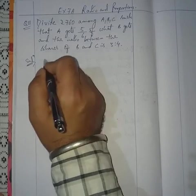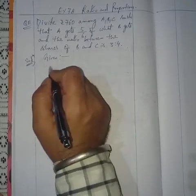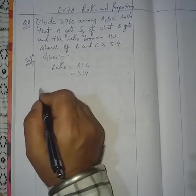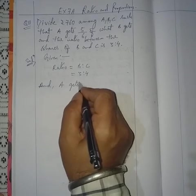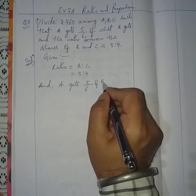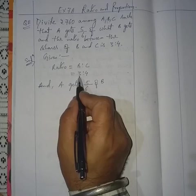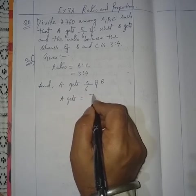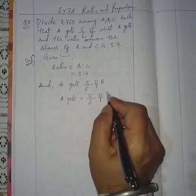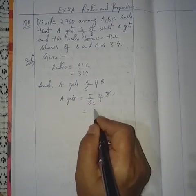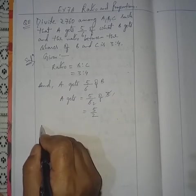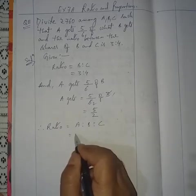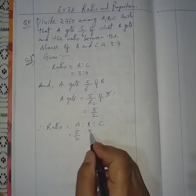Solution: the ratio of B is to C is given as 3 is to 4, and A gets 5/6 of B. So here B is 3, and A equals 5/6 of 3, which gives 5/2. Therefore the ratio A is to B is to C equals 5/2 is to 3 is to 4.